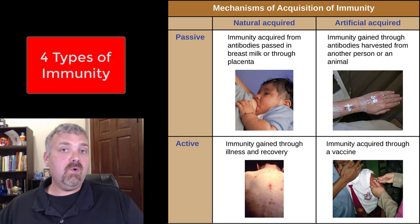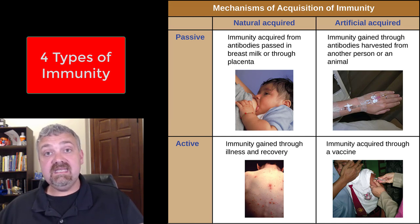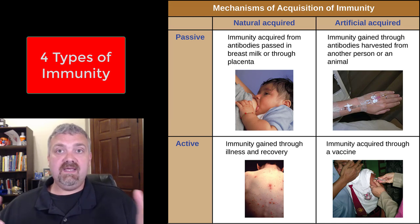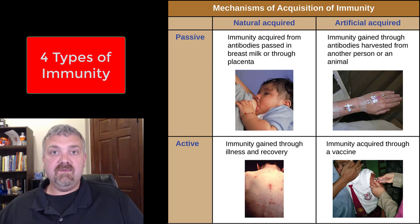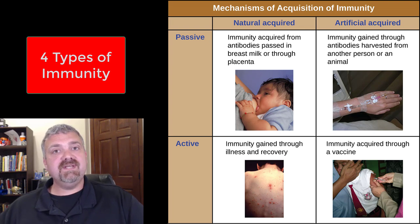Quick review: naturally acquired passive immunity — think breast milk or antibodies crossing the placenta. Artificially acquired passive immunity is antibody therapy, where you directly give a human being antibodies to try to save them. Naturally acquired active immunity — you got sick, you didn't die, you recovered, and now you're immune. Artificially acquired active immunity — you get a vaccine, your body mounts an immune response to that pathogen without you having gotten sick, and now you're immune. Those are the four types of immunity. Have a wonderful day. Be blessed.